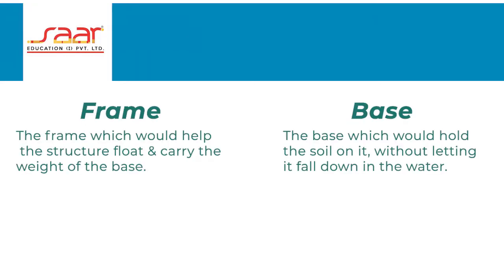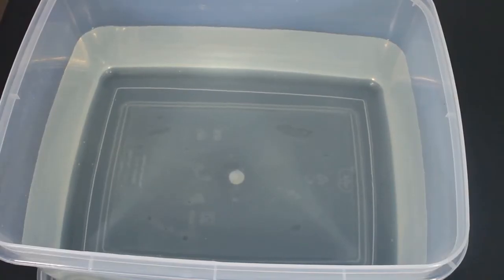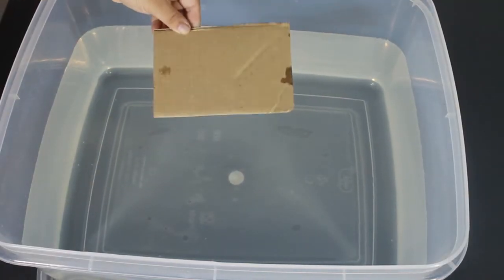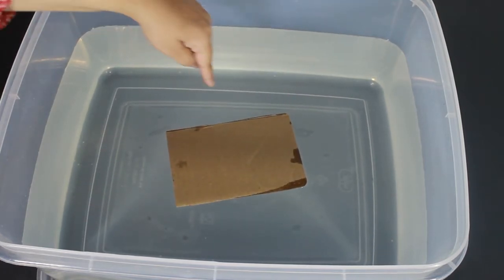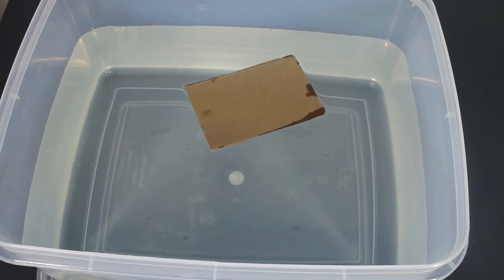So let us now make the base on which the soil will rest and not mix with water. The materials that we can use for the base are aluminum foil, bubble wrap, cardboard, and netting. Test each material to check which of these materials would suit best. Try a cardboard and keep it in the water for some time. What happens?